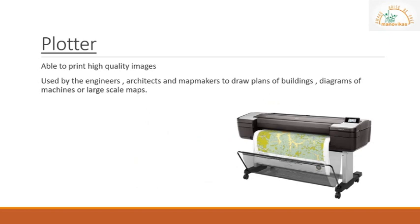The next output device is a plotter. Plotters are a special type of printer which are able to draw high quality images. These kinds of printers are used by engineers, architects, or map makers to draw plans of buildings, diagrams of machines, or large scale maps. A plotter interprets commands from a computer to make line drawings on paper with one or more automated pens.